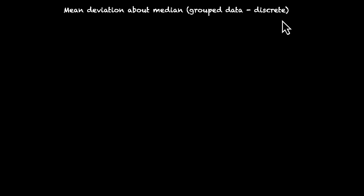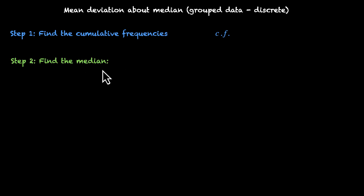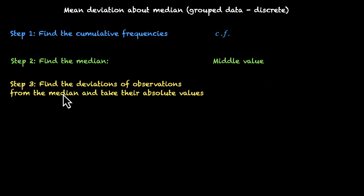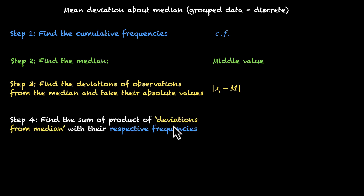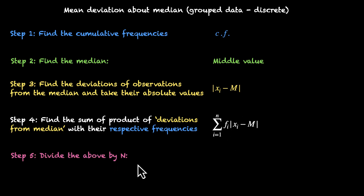Let's summarize the steps to find mean deviation about the median for discrete grouped data. Step 1: find the cumulative frequencies. Step 2: use cumulative frequencies to determine the median — the middle value. Step 3: find the absolute deviations of observations from the median, |xi − m|. Step 4: multiply each deviation by its frequency and sum them all up to get Σfi|xi − m|. Step 5: divide by n to get the mean deviation about the median: (1/n) × Σfi|xi − m|.